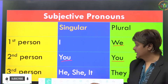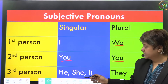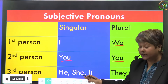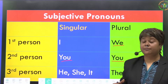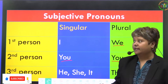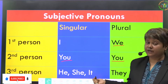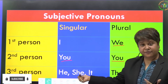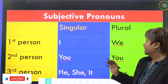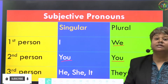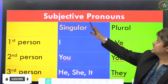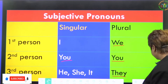For third person singular, we use he, she, or it. If it's a male, we use 'he'. If it's a female, we use 'she'. For a baby, animal, or non-living thing like a pencil box or doll, we use 'it'. In plural third person, we always use 'they'.